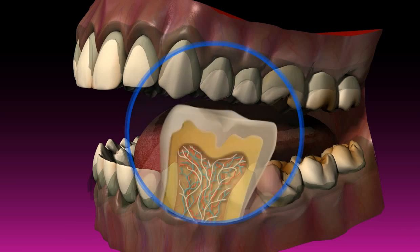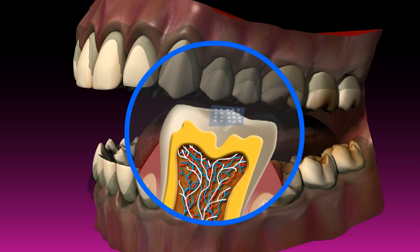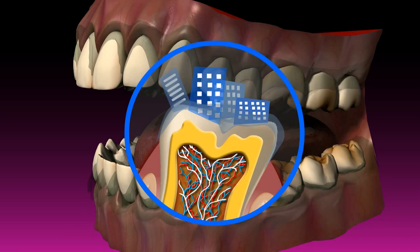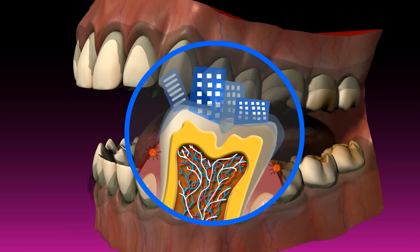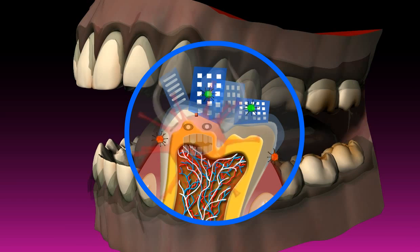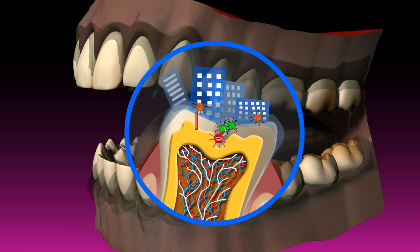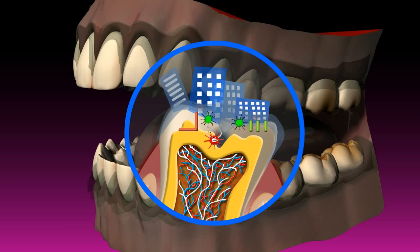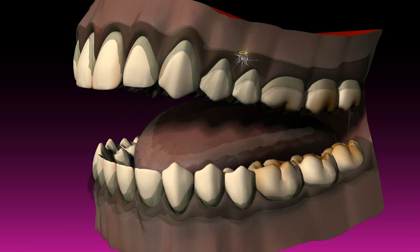Mature plaque is organized exactly like a small town. There are bacteria whose only specialization is sticking to the tooth, other bacteria that form tubes in which nutrients are transported, and yet other bacteria that dissolve the dental enamel and thus produce energy for the plaque, to specify just a few.